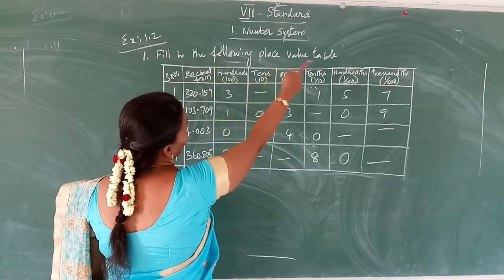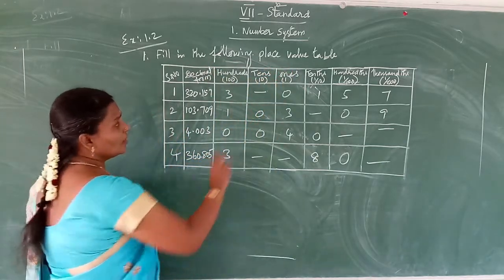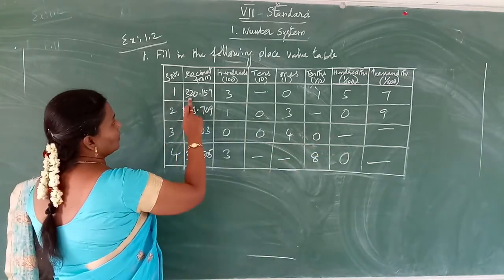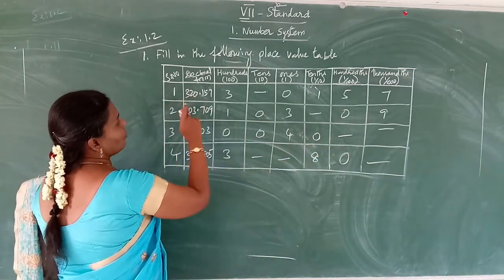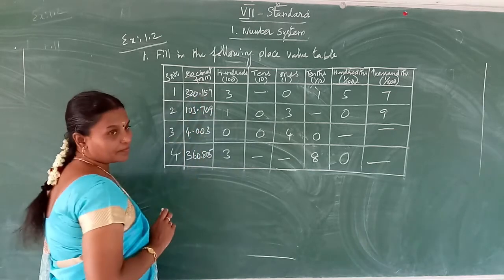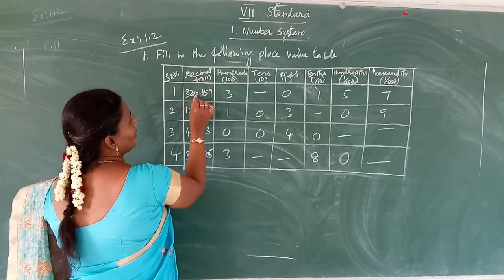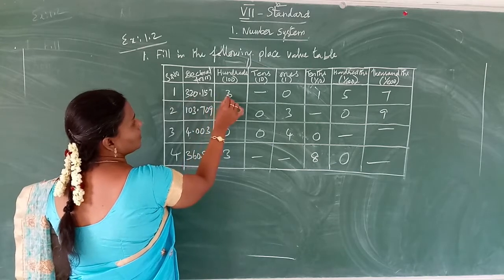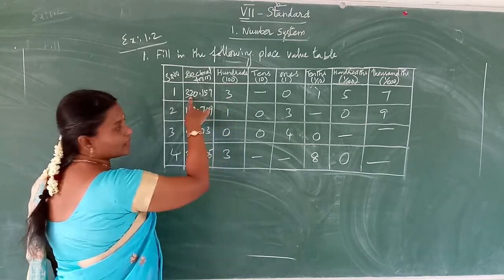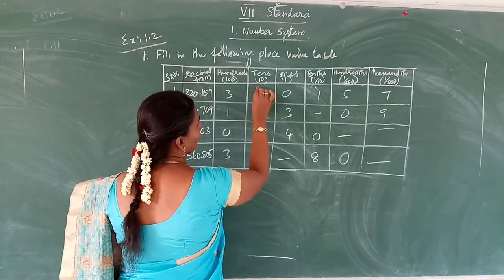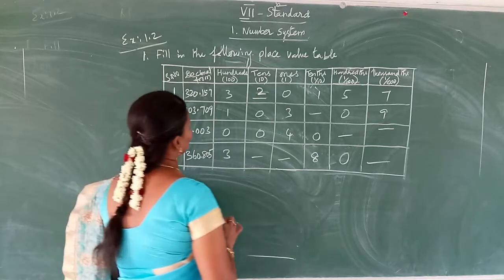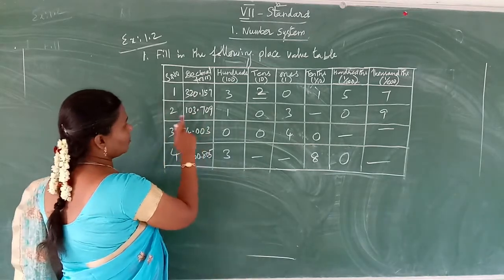The decimal form is 320.157. So the hundreds place has three. Then what takes the tens place? Yes, it is two. So here you want to write two in the tens place.